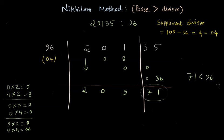Now our result in the remainder column is a two digit number and we can clearly see 71 is less than 96 which is the divisor. This is our correct remainder and this is going to be our quotient.